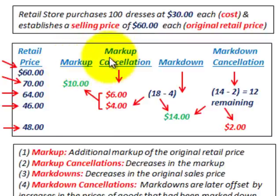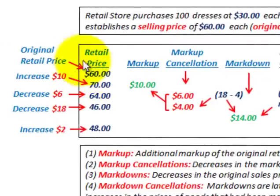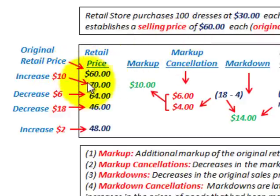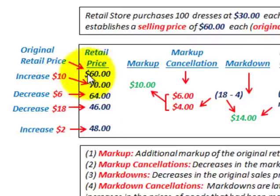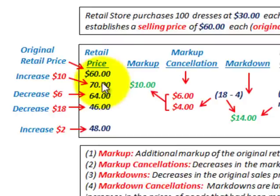We're going to determine the markup, the markup cancellation, the markdown, and the markdown cancellation. Starting with the original retail price of $60, the store manager decided he could make more money on these dresses, so he increased the price by $10 from $60 to $70. That increase of $10 is considered a markup — simply the $10 difference.